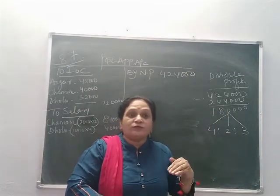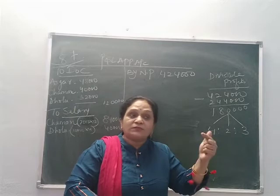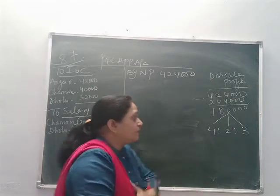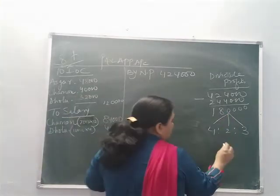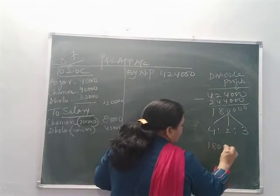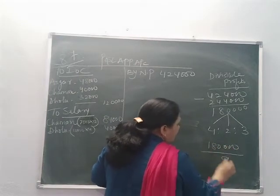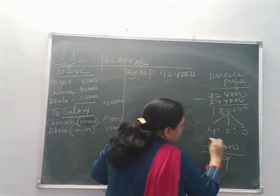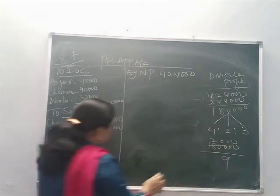This divisible profit of 1 lakh 80,000 is to be divided in the ratio 4:2:3. Now we check whether Dholu's guarantee is fulfilled. So 1 lakh 80,000 divided by 9 equals 20,000 per unit.